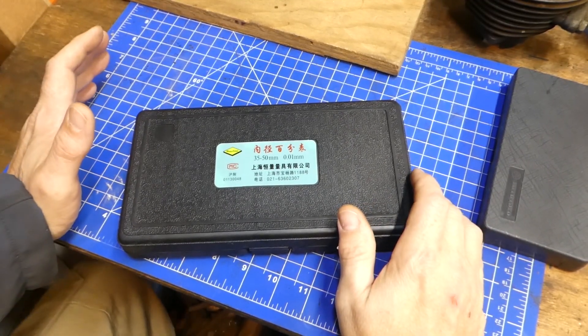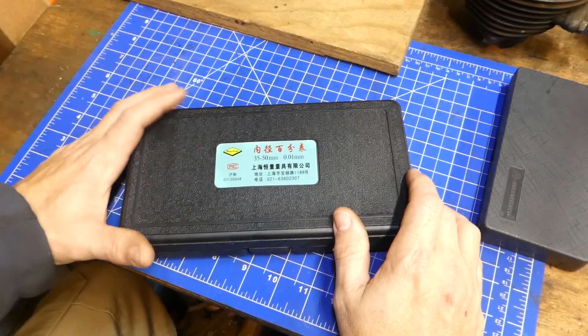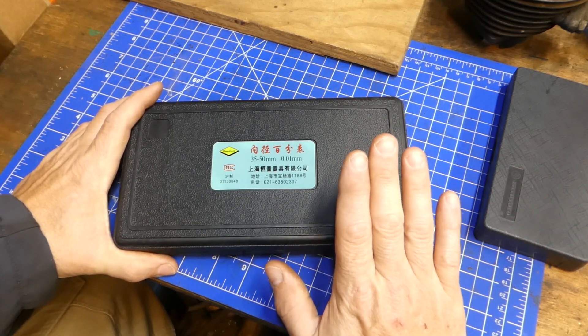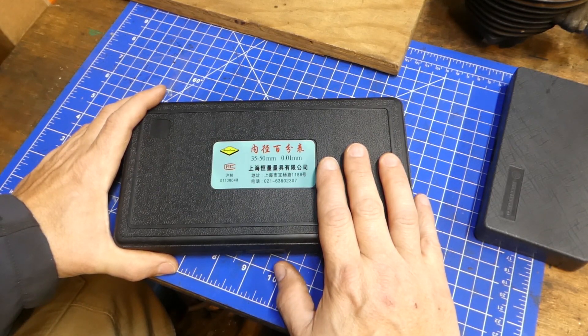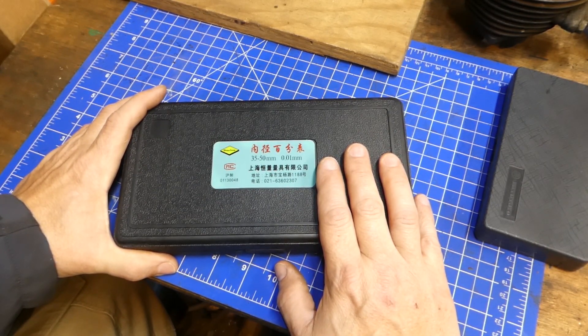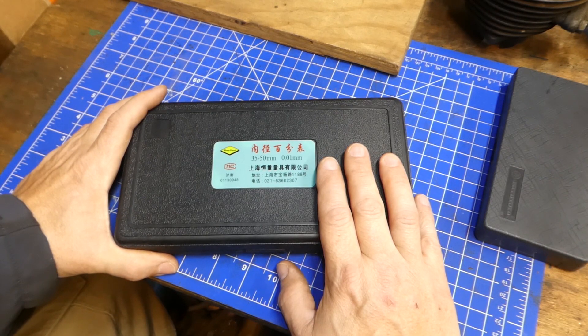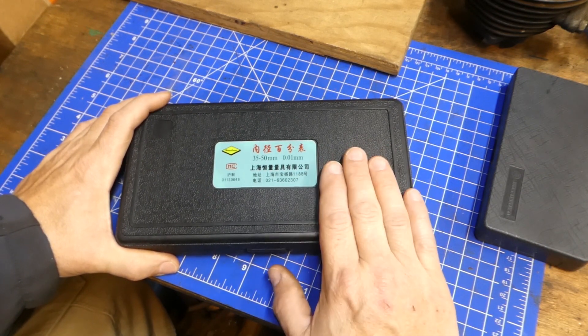I have to be a glutton for punishment or just very cheap, but I bought the cheapest bore gauge on Amazon. And when I say cheap, it's cheap. $15 for what's in this box.